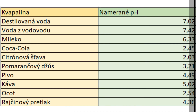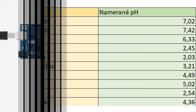In our experiment, we have measured the pH of 10 different substances commonly found in the household and have created a simple table with individual measurements. Using our results, we can then determine whether each liquid is acidic or basic.